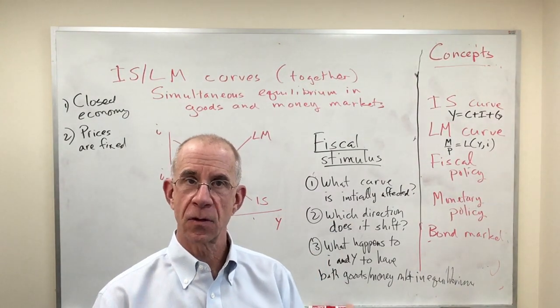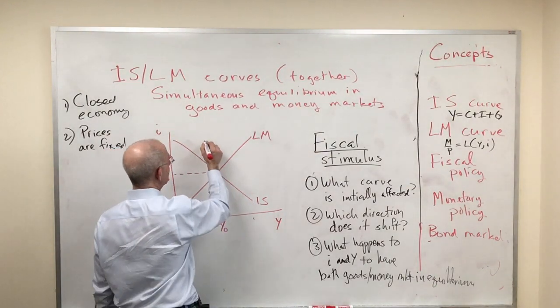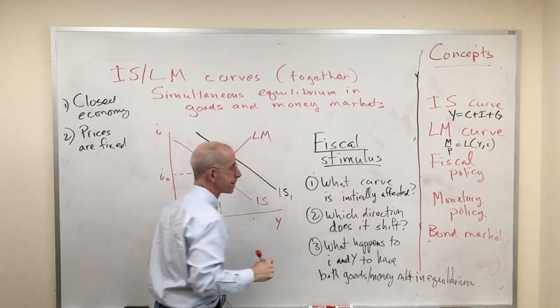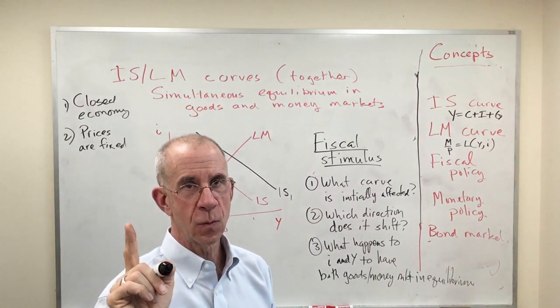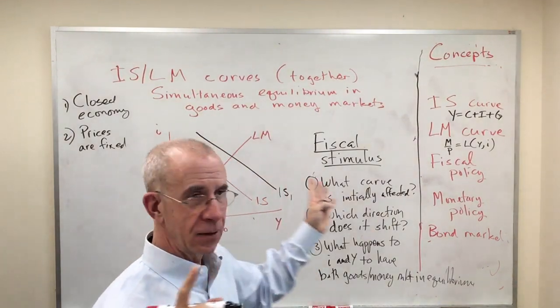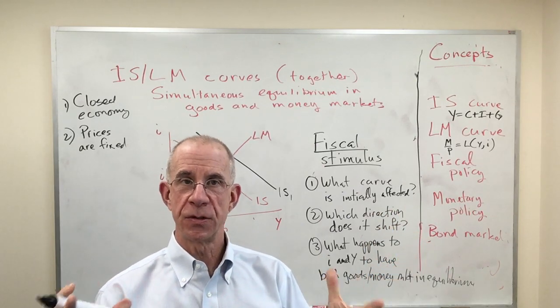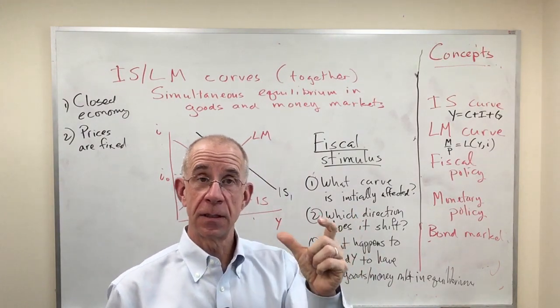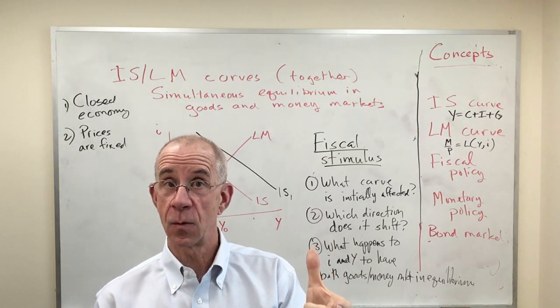Now, if you go back and look at the IS curve derivation and introduction to that, what you'll see is that the IS curve shifts to the right. Emphasize one more time, that is not, by itself, a reflection of an increase in aggregate demand. The IS curve is not the aggregate demand curve. But what you see is that there is a change in the combinations of interest rates and output such that the goods market is in equilibrium.